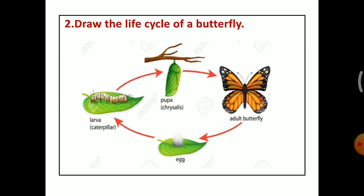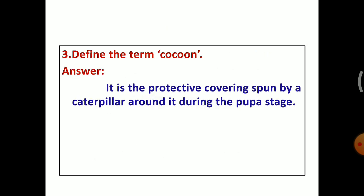Look at this picture you can understand that who spun this cocoon. The caterpillar spun the cocoon. So what is the use of that cocoon? That cocoon protects the caterpillar in the pupa stage. So it is the protective covering spun by a caterpillar around it during the pupa stage.